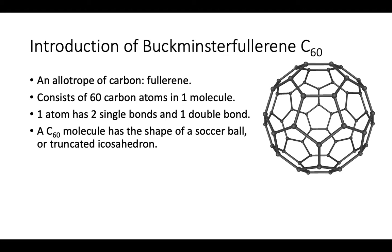C60 consists of 60 carbon atoms, and each carbon atom bonds together by two single bonds and one double bond. The whole structure of this molecule has the shape of a soccer ball, also known as a truncated icosahedron.